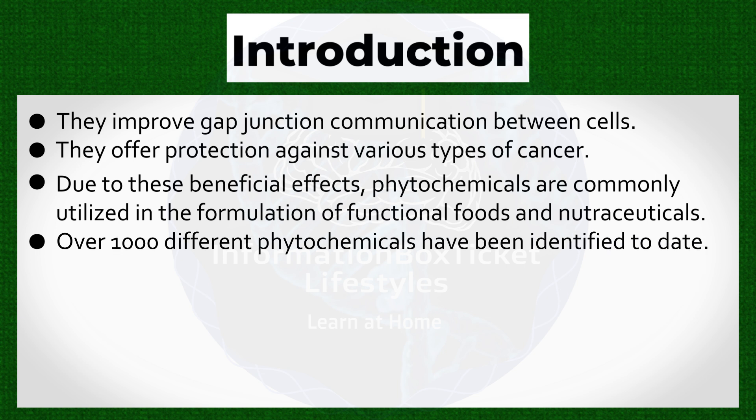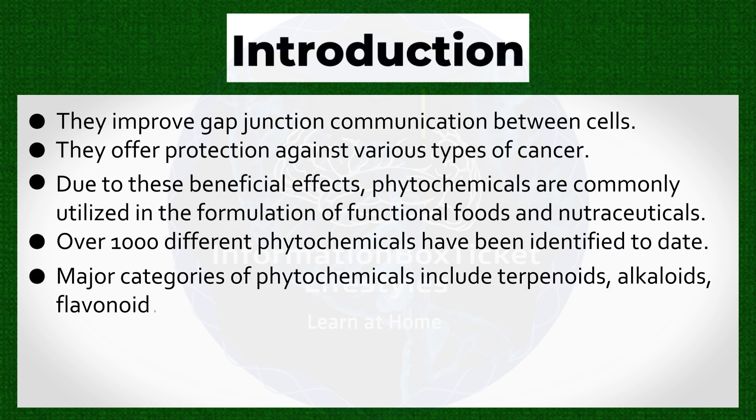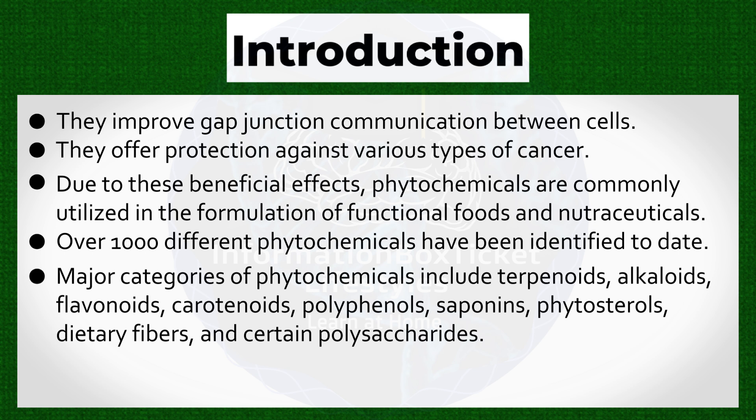Over 1,000 different phytochemicals have been identified to date. Major categories of phytochemicals include terpenoids, alkaloids, flavonoids, carotenoids, polyphenols, saponins, phytosterols, dietary fibers, and certain polysaccharides.